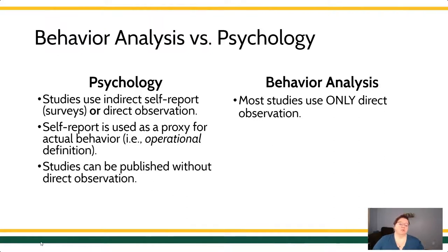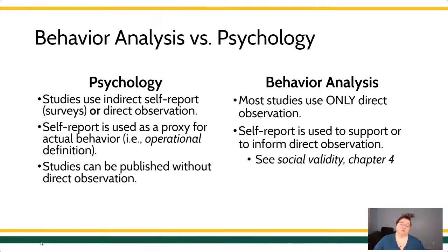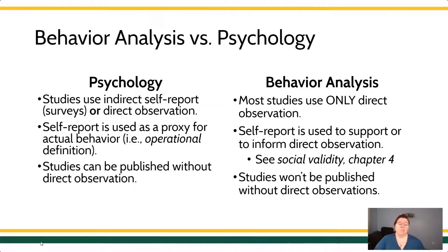That is changing a little bit — we're starting to see a few more studies being published. But for the most part, when we're talking about clinical work, we're talking about only looking at observable client behavior. We do use self-report, but we tend to use it as a tertiary or secondary measure to the direct observation. I can observe the learner's response and then ask the learner about their experiences. The primary variable is the observation, but we supplement that with self-report — especially for social validity and quality measurements. Many behavior analytic journals will not publish a research study if it doesn't have direct observation.